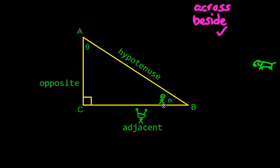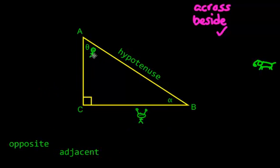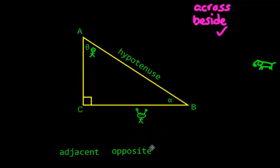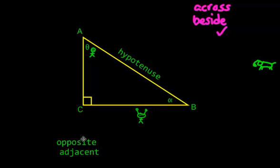I need you to get really comfortable with this — so if I put you right here and say where is the alien, you would say the alien is across from me, that is opposite. I'd recommend practicing it, rewinding this video so you get really comfortable with opposite, adjacent, and hypotenuse. The lucky thing is hypotenuse never moves — it's always there. Opposite and adjacent depend on where you are standing.